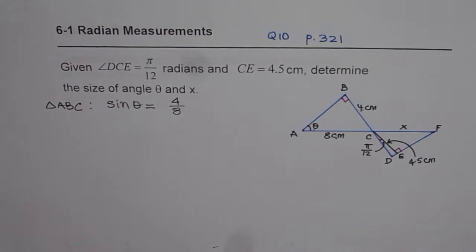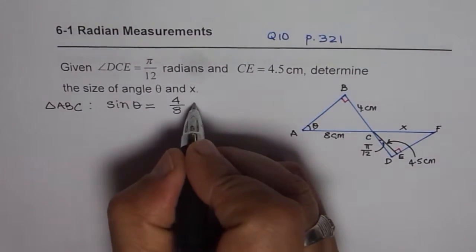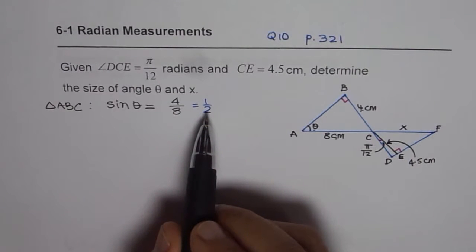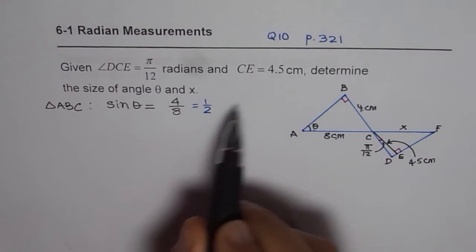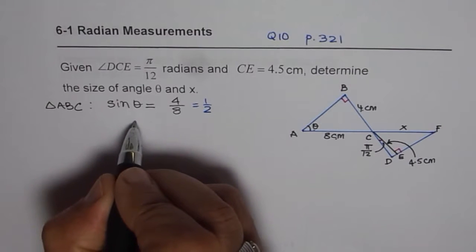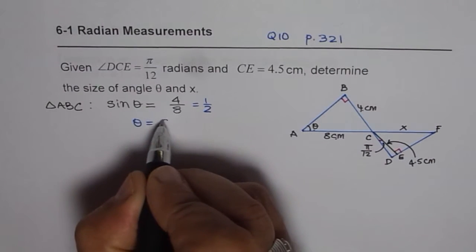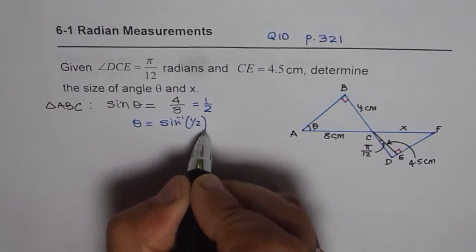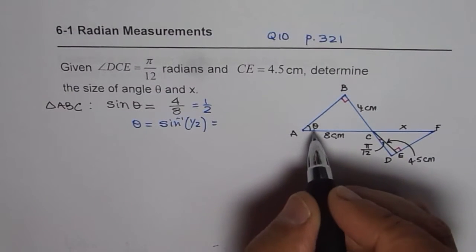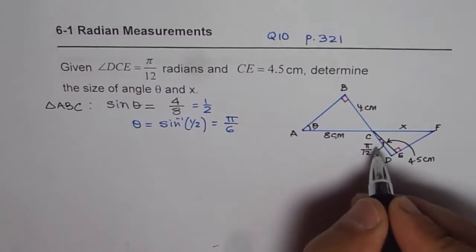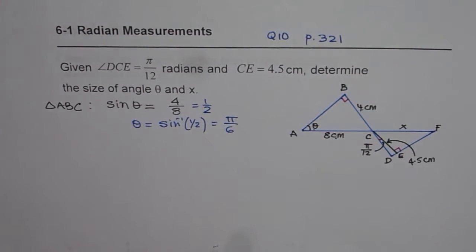From here we see it is ratio of 1 to 2. If you know your special triangles, half is the ratio, it is 60, 30, 90 degrees. But you can use your calculator and you will find that θ equals to sine inverse of half, which is 30 degrees or π/6. We are doing it in radians, so we will use π/6.